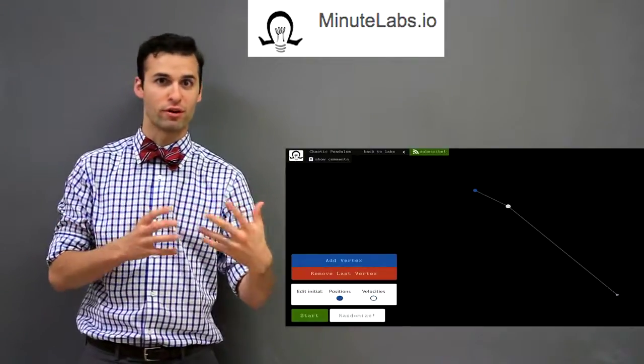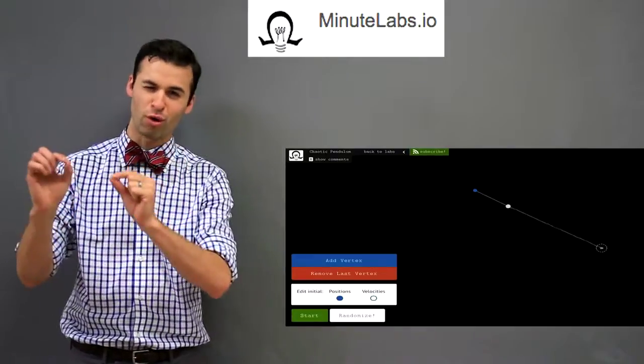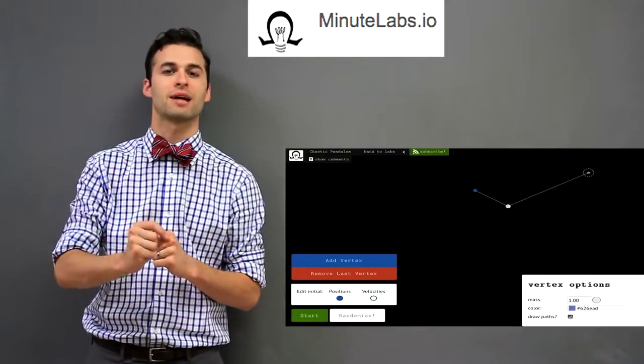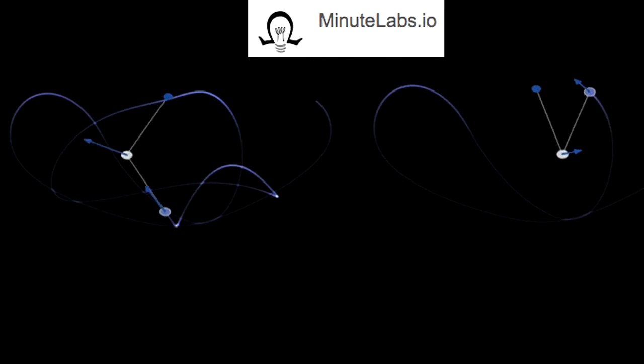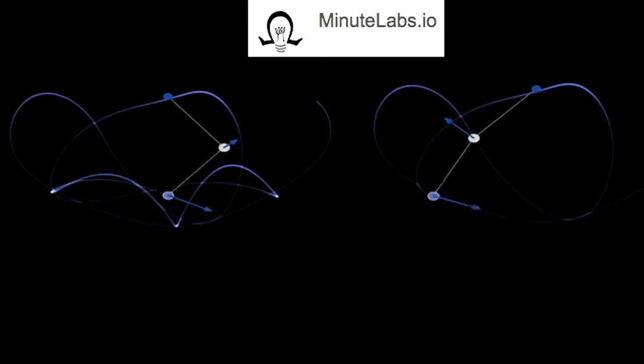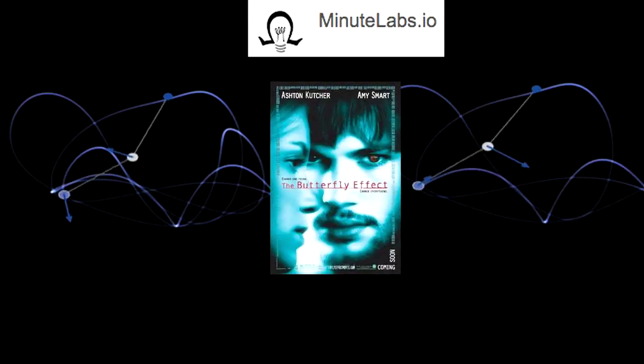You add vertices, remove vertices, and you can control their position, velocity, and mass. Now, these pendulums exhibit chaotic motion, meaning that their initial conditions, even if slightly variable, have very different outcomes. This is analogous to the butterfly effect.